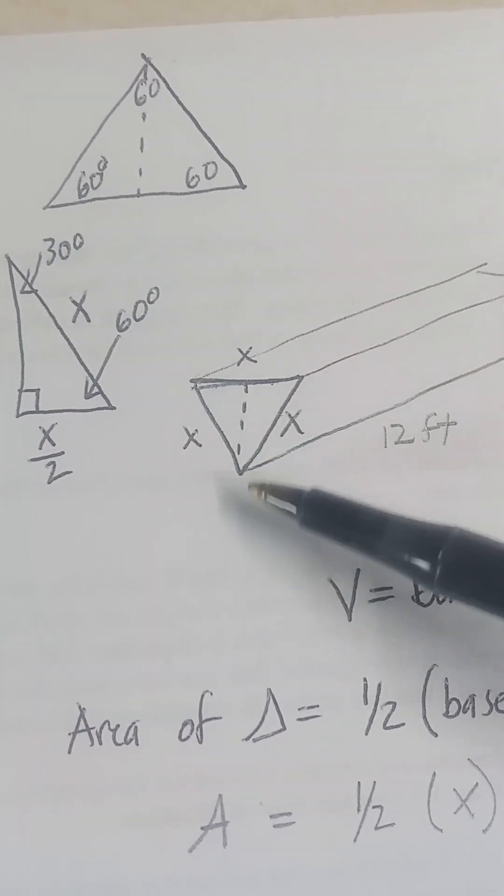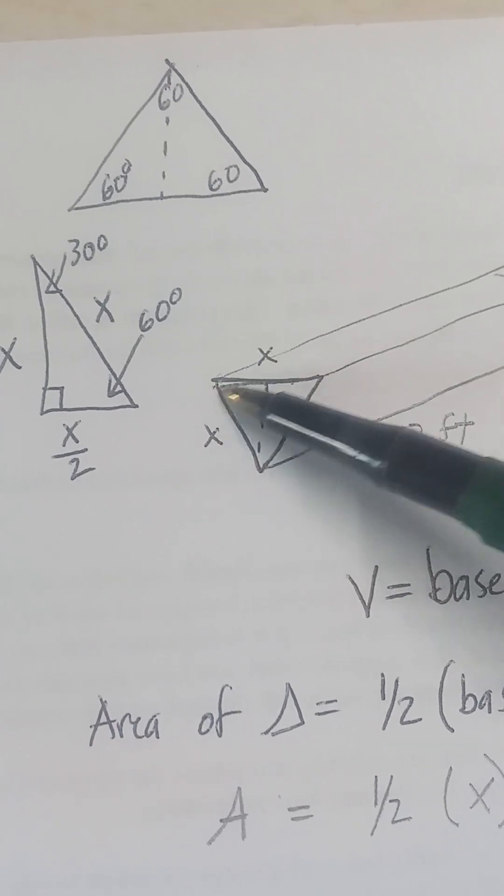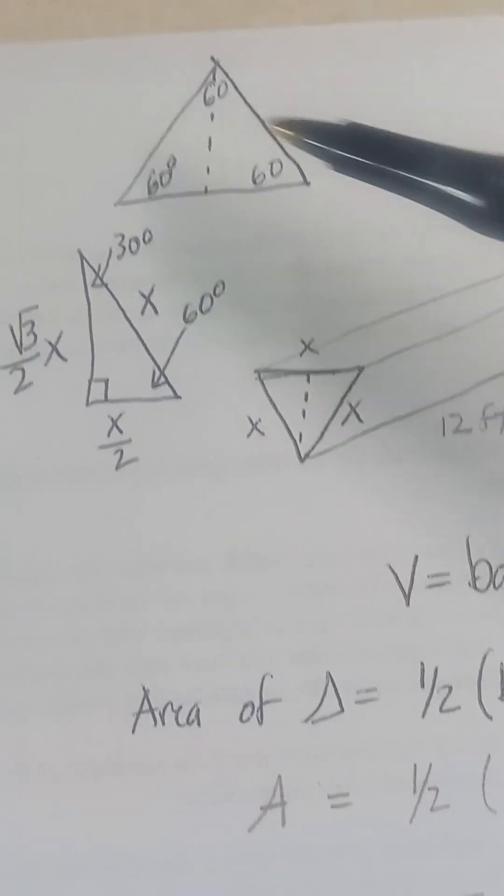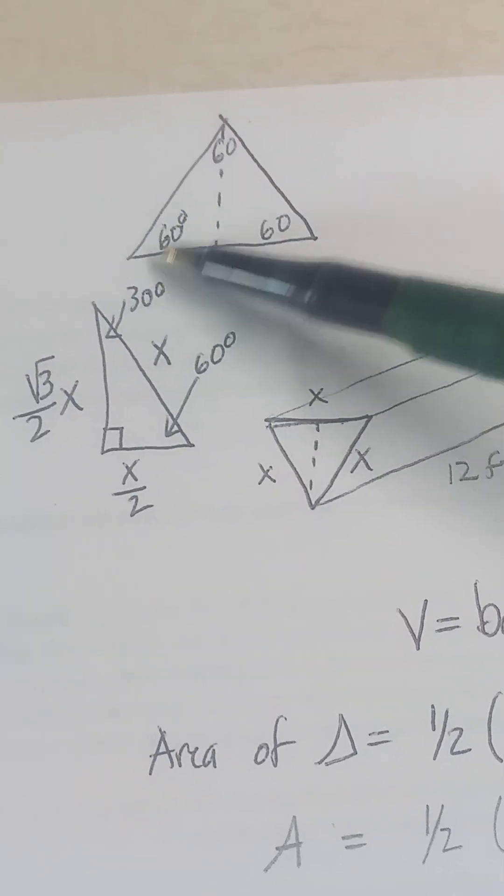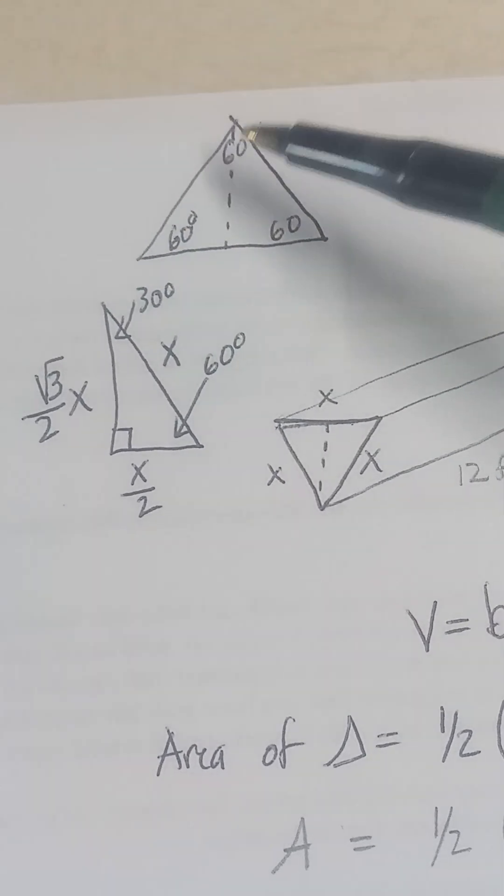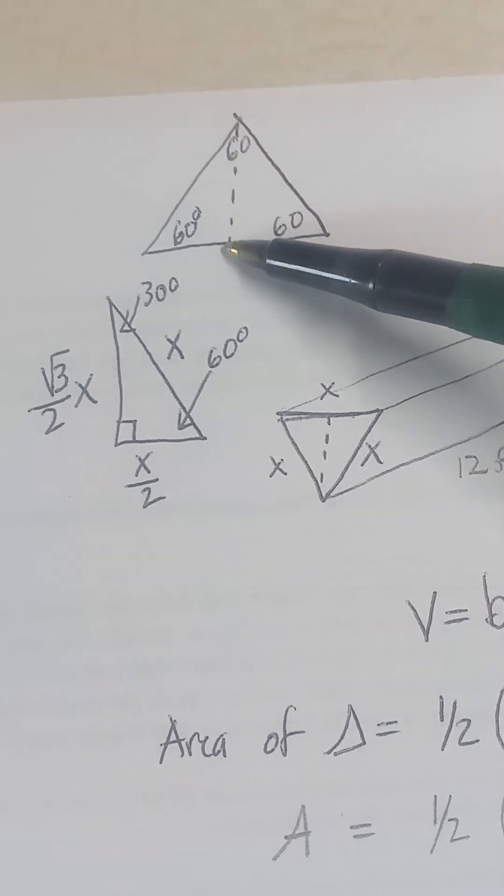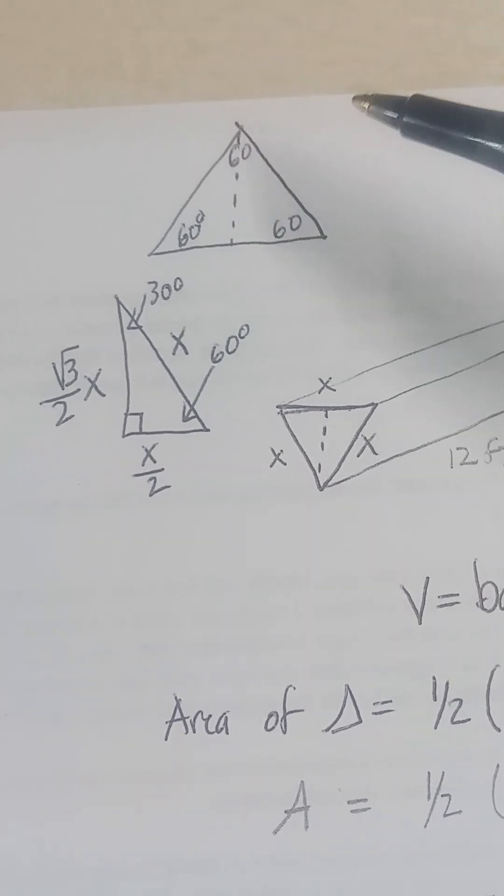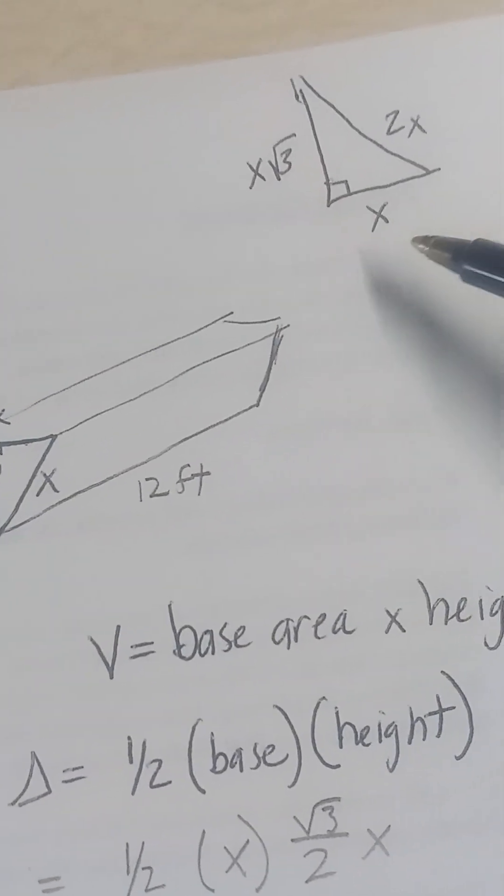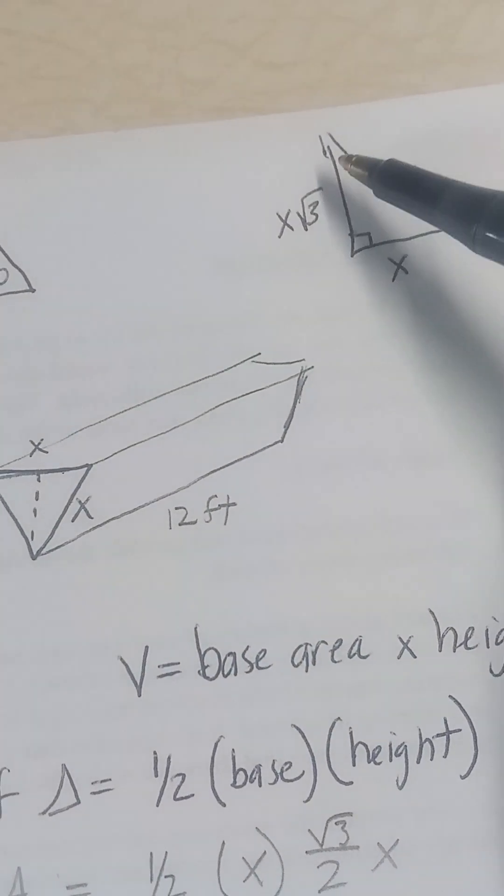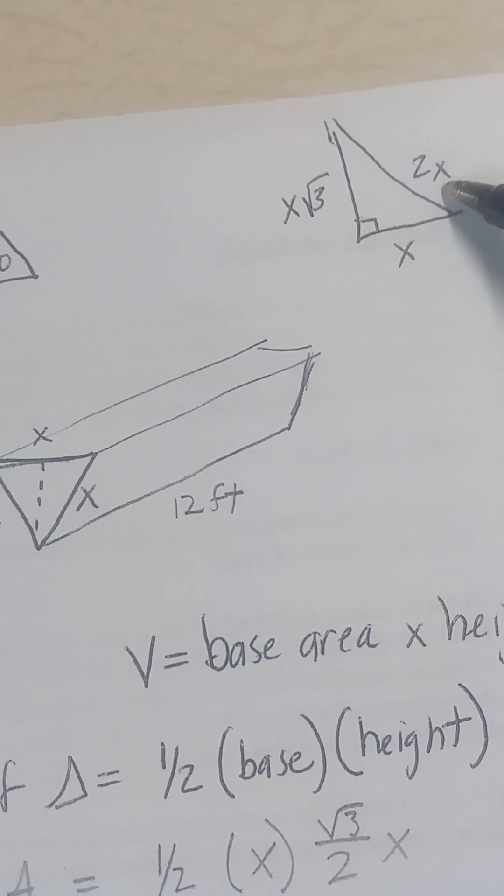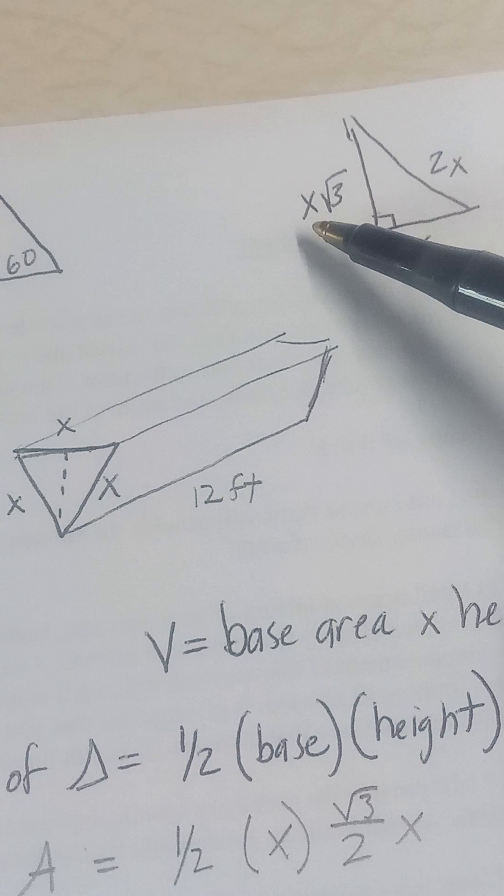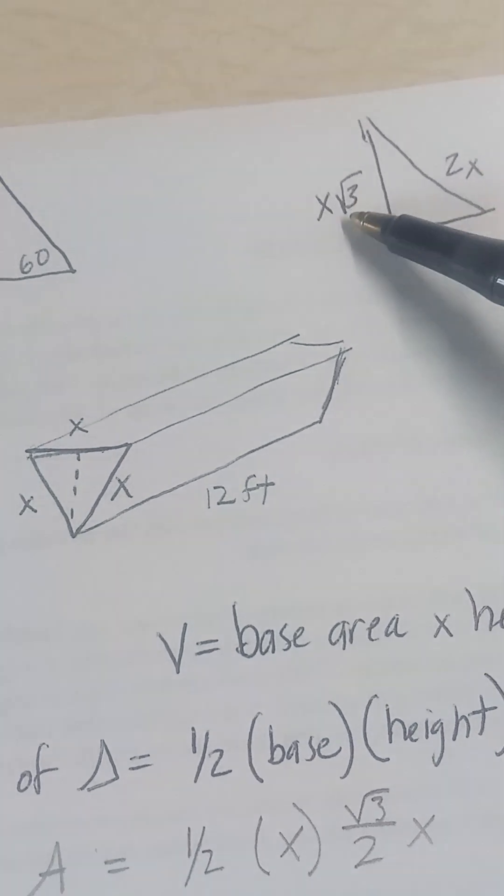The triangle has all sides equal to X. It's an equilateral triangle, which means we've got 60 degrees on each vertex. To find the height, I split one vertex in half to get a 30-60-90 triangle. In 30-60-90 triangles, the short side is half of the hypotenuse and the longer leg is the short leg times root 3.